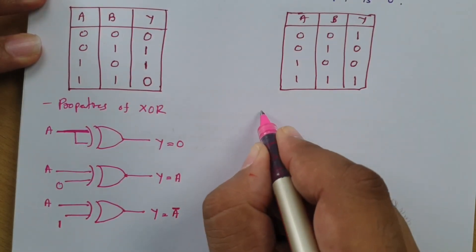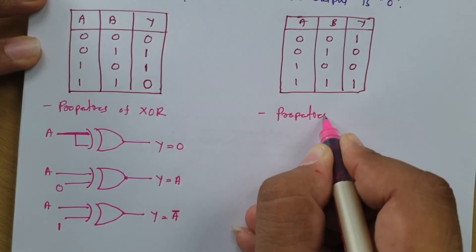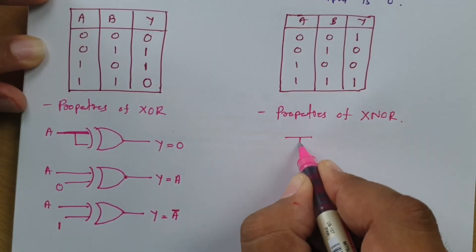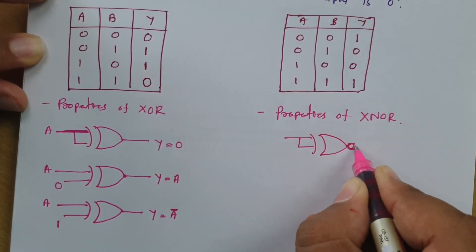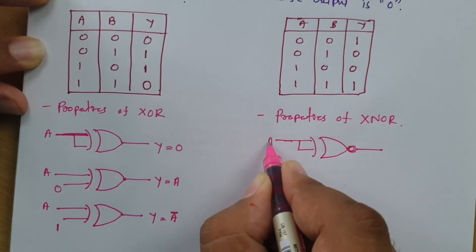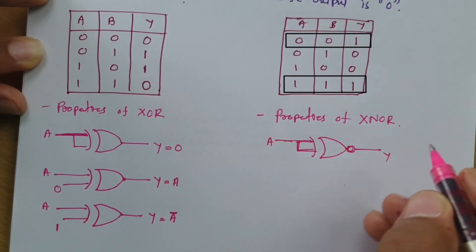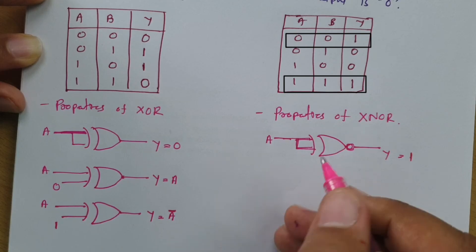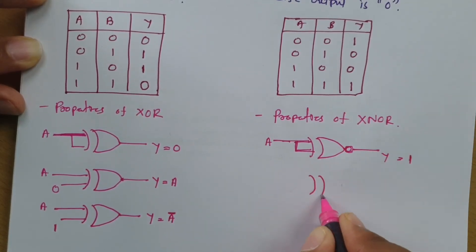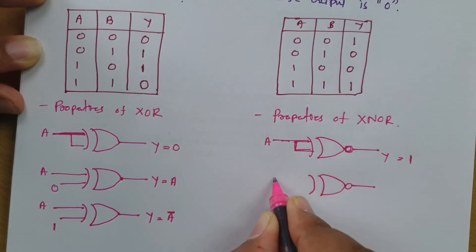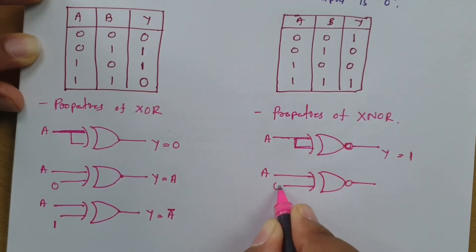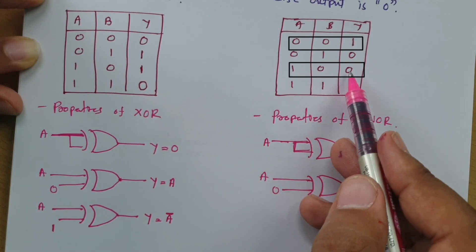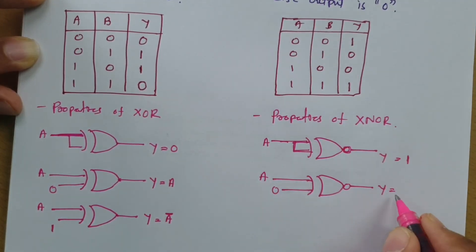Similarly, for the XNOR gate, the properties are the inverse of XOR gate properties. In the XNOR gate there is a bubble on the output. First property: if both input terminals are shorted (input A), then 0,0 gives 1 and 1,1 gives 1 — so output is always 1 when both terminals are shorted. Second property: if one terminal is A and second terminal is 0, then A=0 gives output 1 and A=1 gives output 0 — so output is the complement of A, i.e., Ā.